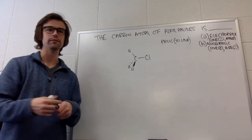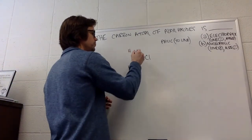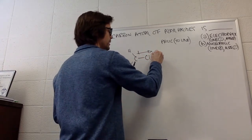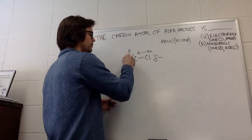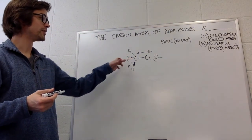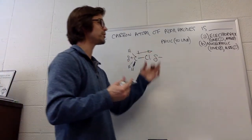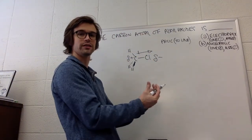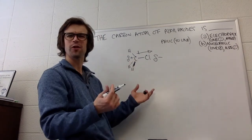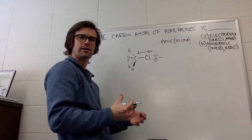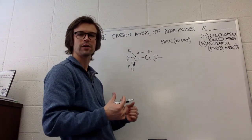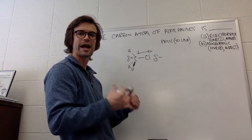Is that carbon positive or negative? That carbon has a big dipole — chlorine is more electronegative — so there's a big partial negative on the chlorine and a big partial positive on the carbon. That means the carbon is partially positively charged; it's an electrophile. It wants more electrons to complete its full octet. Chlorine is not sharing those electrons very well, and that's what makes alkyl halides reactive.